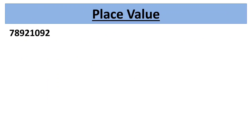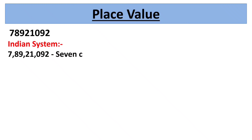Now, in the given number we have to insert commas and write the names according to both systems of numeration. In the Indian system, periods are divided according to the rule 3:2:2. Starting from the right, the first comma is placed after 3 digits, then the next commas are placed after every 2 digits. So we get the number 7,89,21,092.